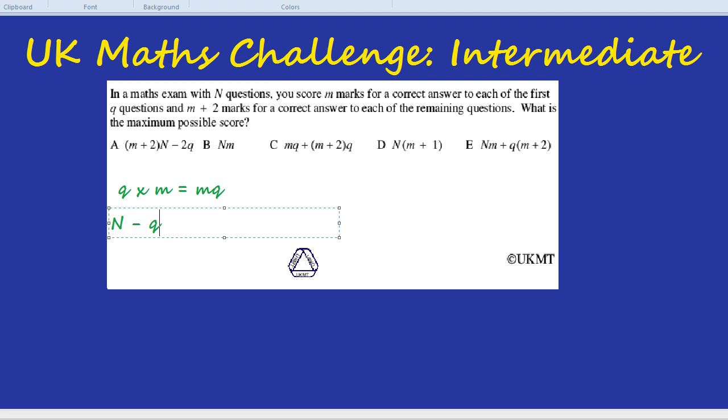And what do we get for each of those questions? The number of marks we get for each of those questions is M plus 2. So in the same way as for the first part we had Q questions and we get M marks for each of them, so we timesed it. Here we have N takeaway Q questions and we get M plus 2 marks for each of them. And we're timesing them. Just for simplicity I'm writing them as two brackets next to each other which means multiplied together.